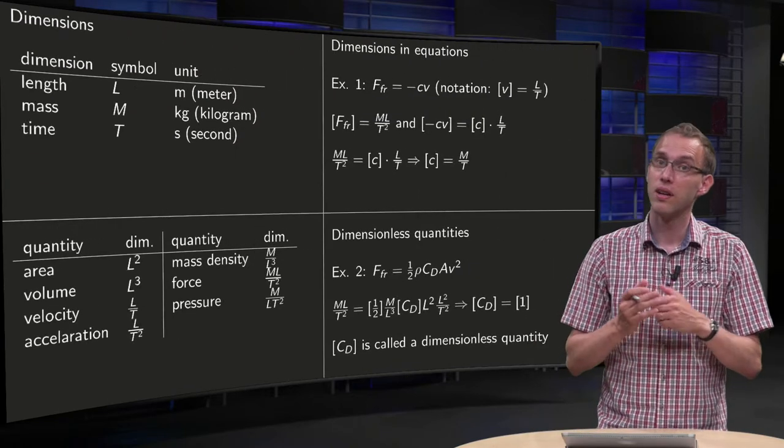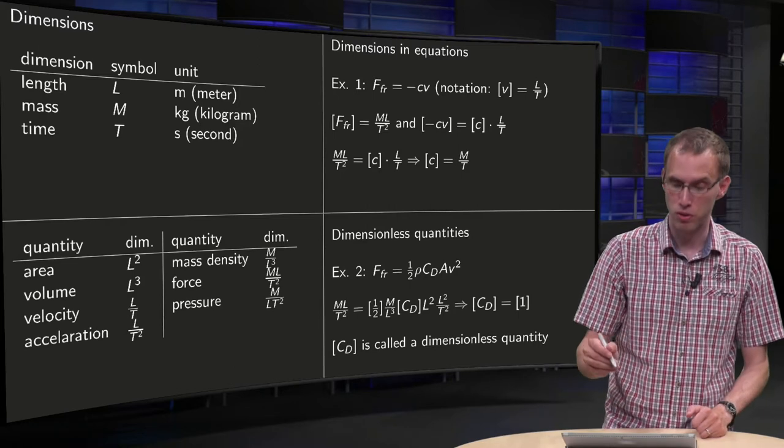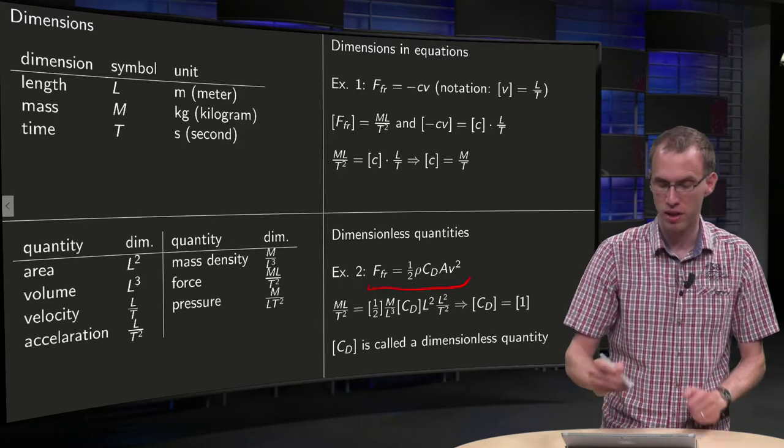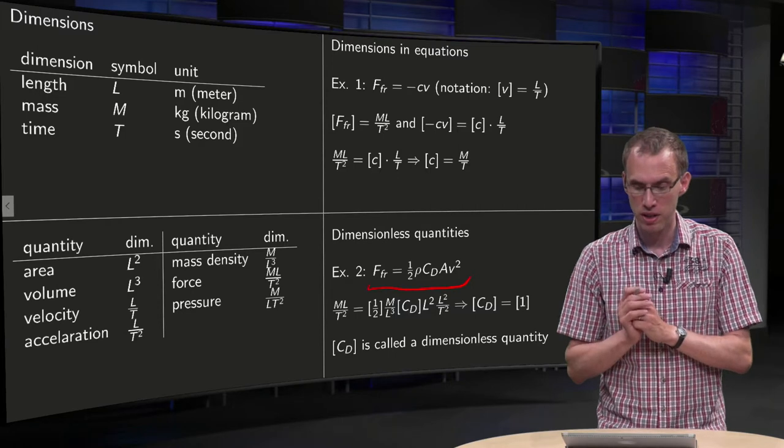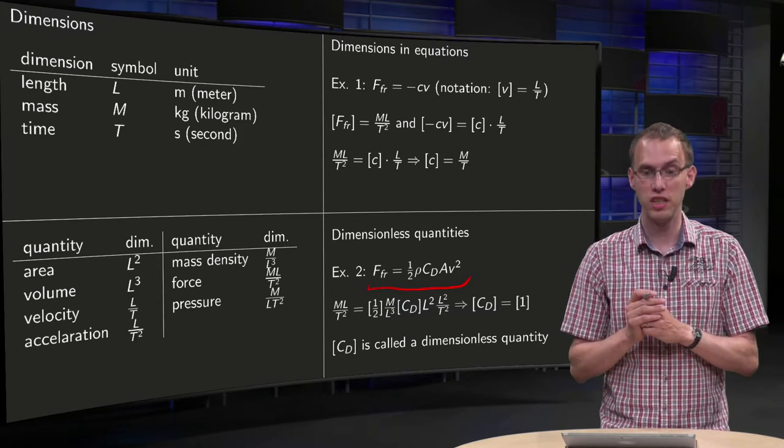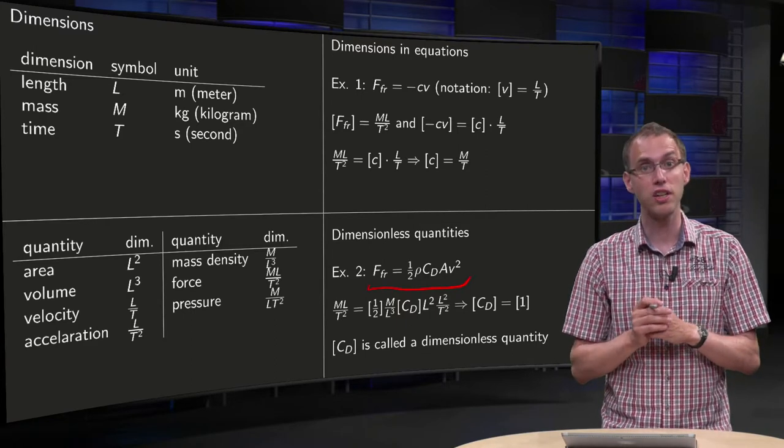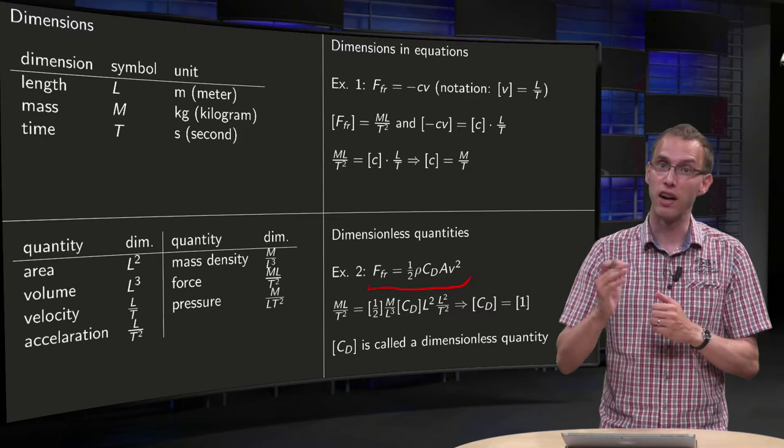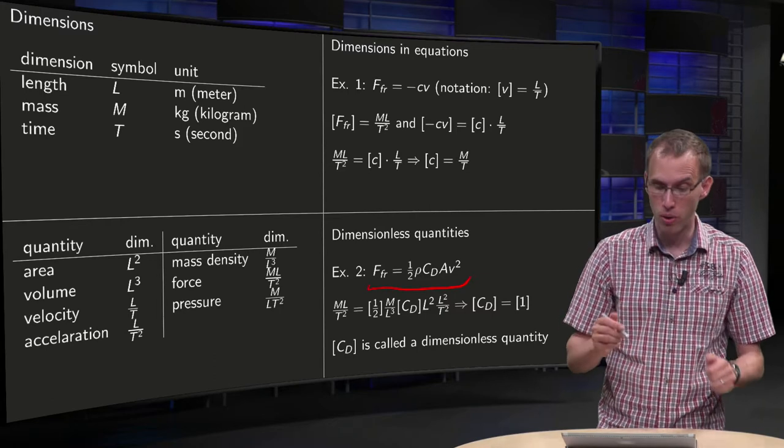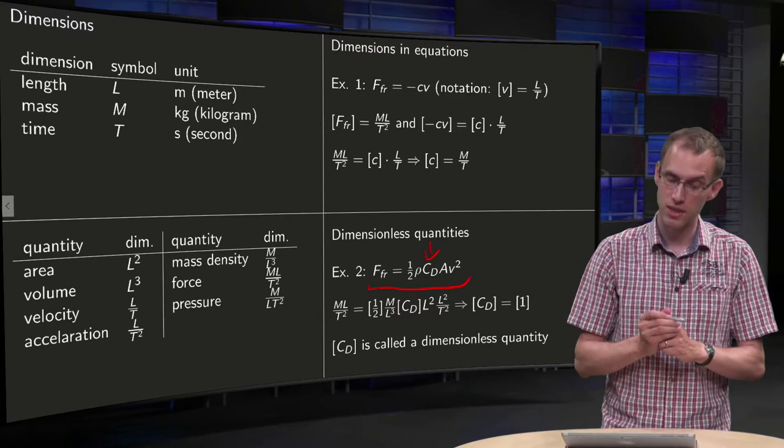Now, let's do a second example, take another friction force proportional to V squared, so well known friction force equals one half rho times Cd times A times V squared, where rho is density of the fluid, Cd is a proportionality constant, A is area and V is velocity, so we know all dimensions except for the dimension of Cd over there. So, let's see.